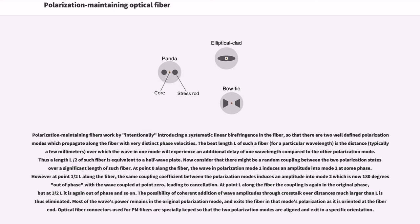At point L along the fiber the coupling is again in the original phase, but at 3L/2 it is again out of phase and so on. The possibility of coherent addition of wave amplitudes through crosstalk over distances much larger than L is eliminated. Most of the wave's power remains in the original polarization mode, and exits the fiber in that mode's polarization as it is oriented at the fiber end. Optical fiber connectors used for PM fibers are specially keyed so that the two polarization modes are aligned and exit in a specific orientation.